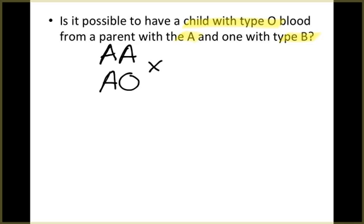Remember that A is dominant to O, so we could be that. And then with type B, same thing. We could either be BB or BO. So any one of these could cross. We could cross AA with BO, we could cross AO with BB, AA with BB, or AO with BO. Is there any one of these that's possible where you get a child with type O blood?